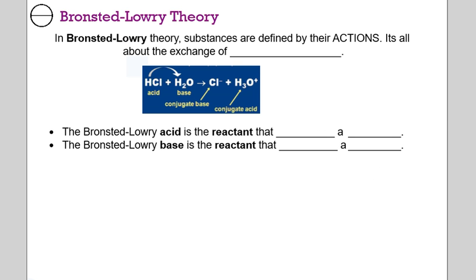There's an entire class of pharmaceuticals called proton pump inhibitors whose job is to stop the pump in the stomach that produces hydrogen ions for digesting food. So when a hydrogen ion loses its electron, all that remains is that proton, so we refer to hydrogen ions as protons sometimes. The dominant theory we're going to use in chemistry is the Bronsted-Lowry theory. In Bronsted-Lowry theory, substances are defined by their actions. It's all about the exchange of protons moving from one species to another.